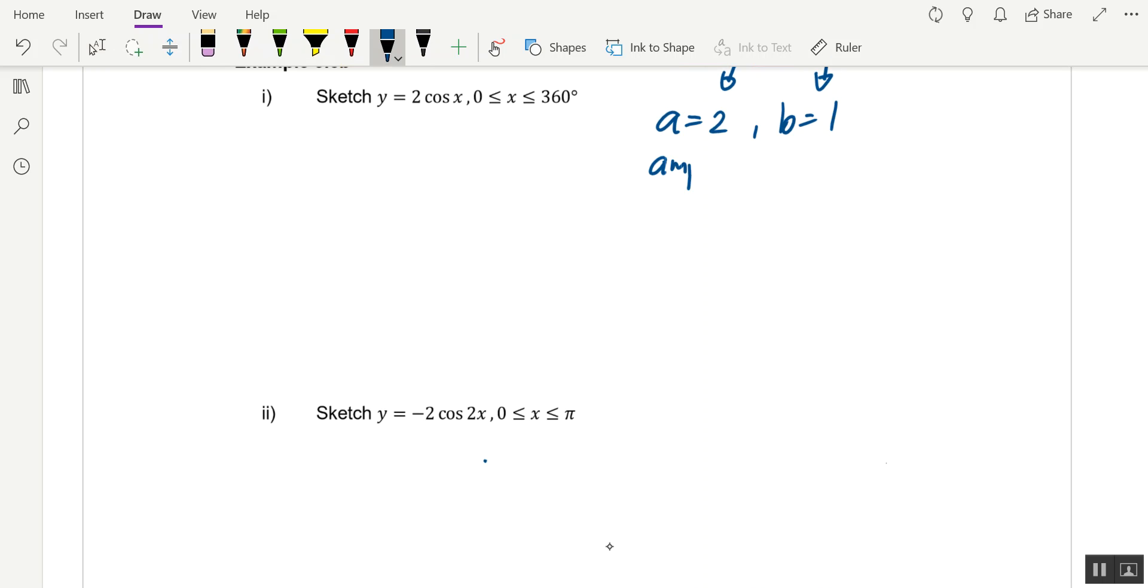Which means that the amplitude is equals to 2, and then the maximum is equals to 2 times 1 which is equals to 2. The minimum is equals to 2 times negative 1 which is equals to negative 2. And the period, because b is only equals to 1, so it is still equals to 360 degrees.